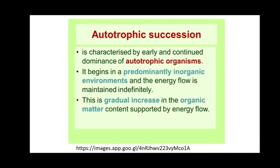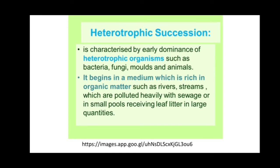Autotrophic succession is characterized by early and continued dominance of autotrophic organisms. It begins in a predominantly inorganic environment, and energy flow is maintained indefinitely. There is a gradual increase in organic matter content supported by the energy flow.